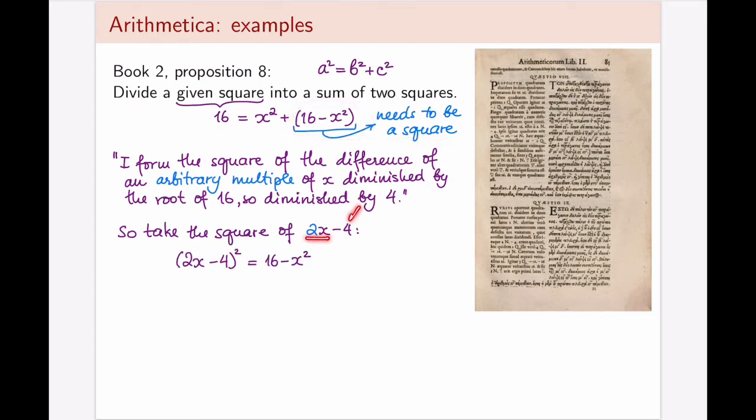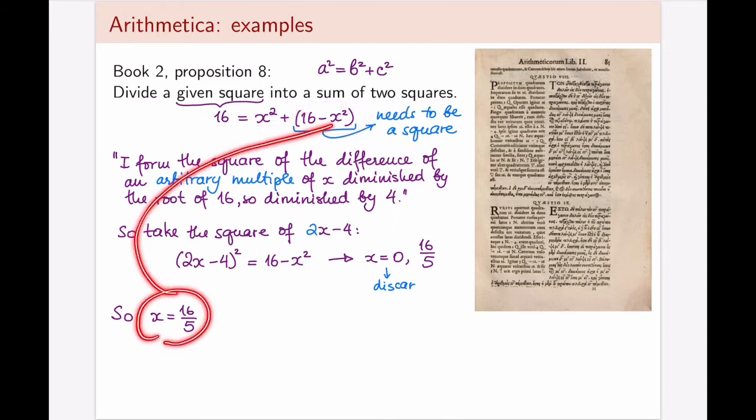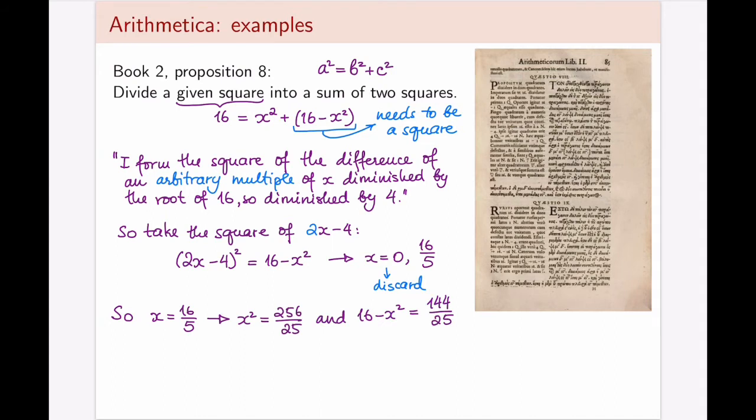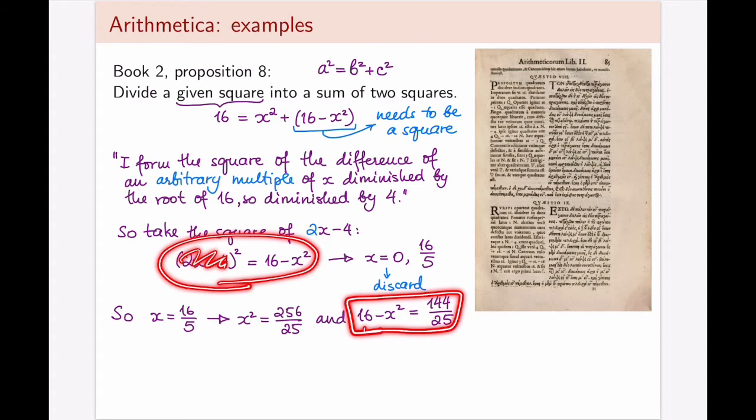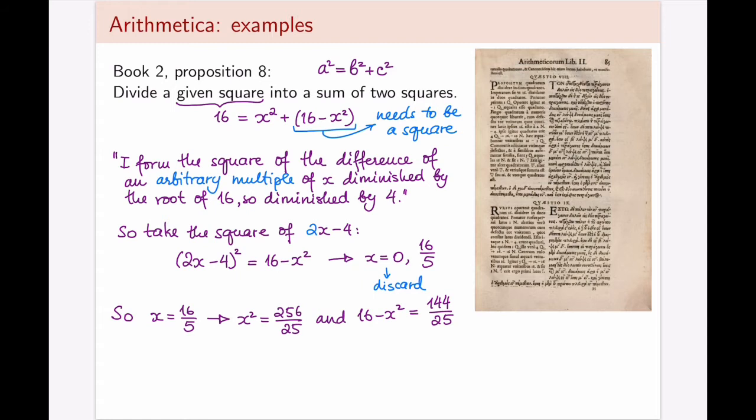So arbitrary multiple of x diminished by 4, subtracted by 4. He makes that into a square, and then he equates it to this portion that needs to be a square in the first place. Now, at this point, this is also where his notation proves useful, because he can, just like we would today, open up the brackets and solve for x. I'm going to skip a couple of algebraic steps. We're going to end up with two roots. x equals 0, which he discards because it's not interesting, and an actual non-zero root. And that's the one we're going to work with. So we have that x is equal to 16 fifths.